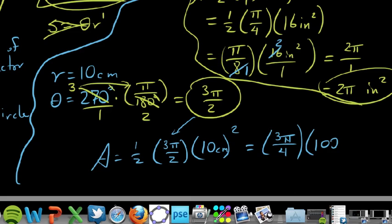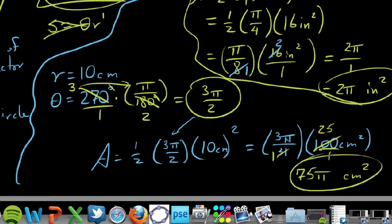And so our 100 and our 4, they cross-reduce. 4 becomes 1. 100 is 25. And so in this instance, we get 25 times 3 pi is just 75 pi square centimeters. So, hey, lickety-split. That's probably the shortest video I've made in a long time. And I hope that that helps.